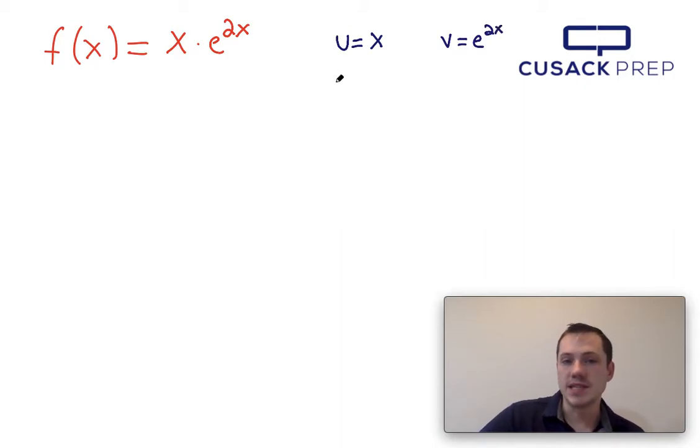Now I need to figure out what du is, also sometimes written as u prime, and the derivative of x is just 1. I also have to figure out what v prime is, and the derivative of e to the 2x, well the derivative of e to itself or e to anything is just that same value. But then we have to apply the chain rule here, so I have to multiply by the derivative of 2x, which is just gonna give me 2.